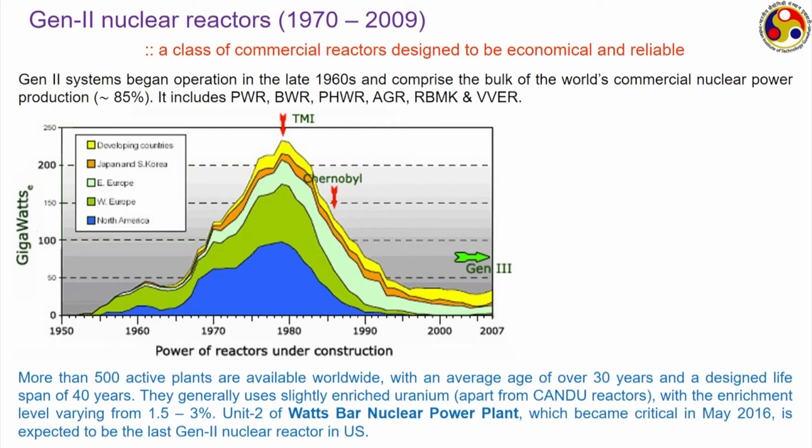The Watts Bar nuclear power plant in the United States, which became critical in May 2016, is expected to be the last generation 2 nuclear reactor in the United States and probably everywhere in the world. This particular plant has a very long history — its commissioning started in the 1970s, then following the TMI incident everything stopped, and it was only around 2010 that it was granted permission to complete construction, with the building completed around 2014 and criticality attained around 2016.